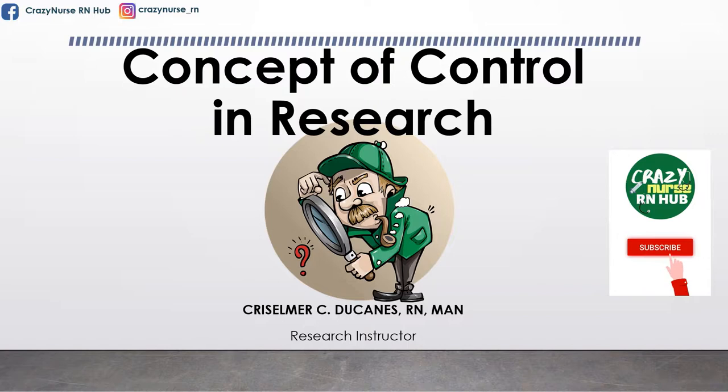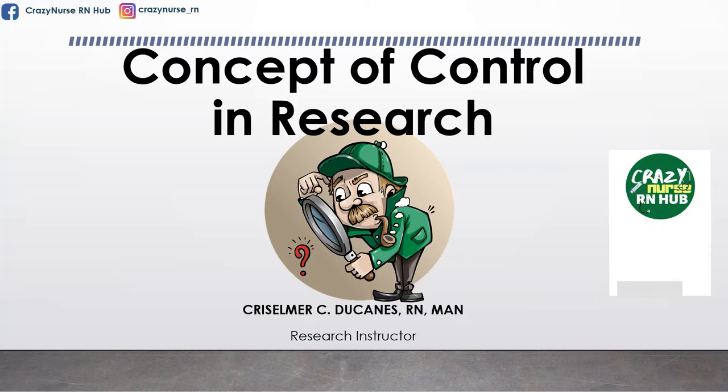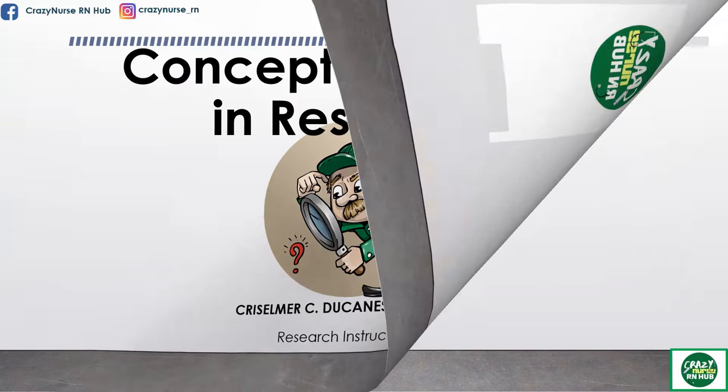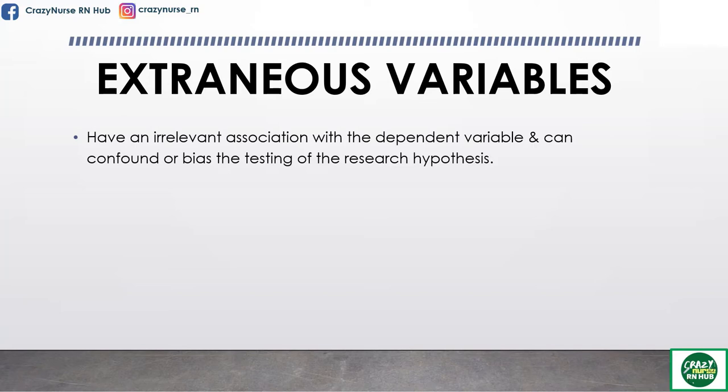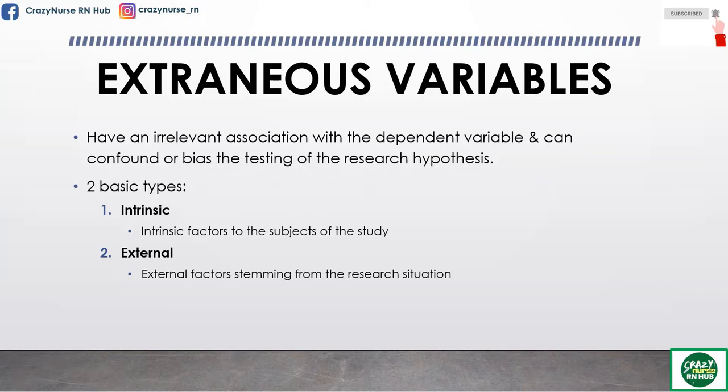Hi there students, my name is Crystal Merducanes and I am your research instructor. For today's topic, we have the concept of control in research. The researcher seeks to control the extraneous variables to determine the true nature of the relationship between the independent and dependent variables. Extraneous variables have an irrelevant association with the dependent variables and can confound or bias the testing of the research hypothesis. There are two basic types of extraneous variables.